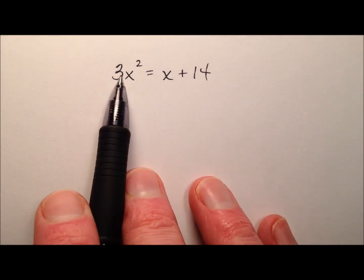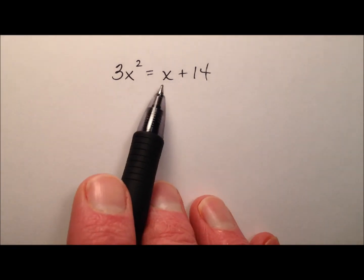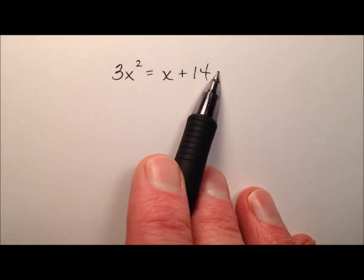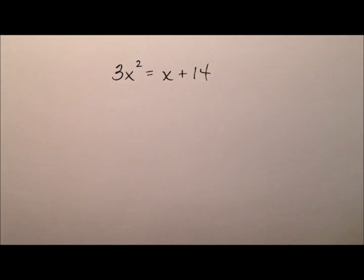Alright, so here we go. We have a quadratic equation and we would like to solve it by factoring. The first thing we need to do is to get all of the terms on one side of the equation and set it equal to 0. Then later on we can use the zero property of multiplication.